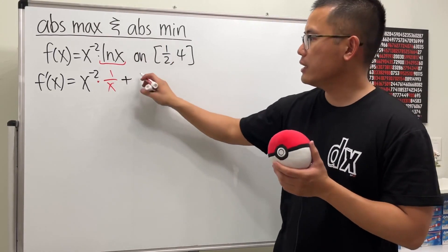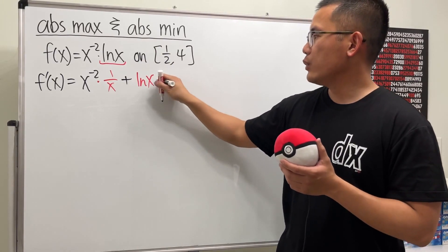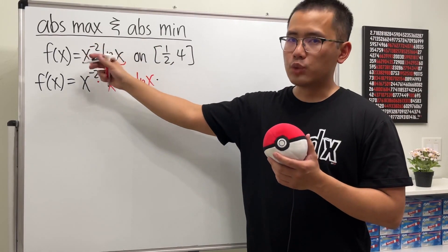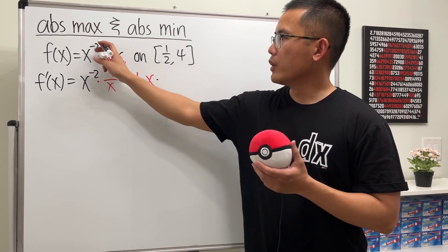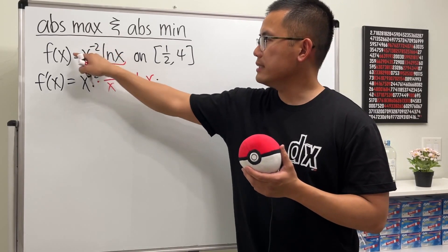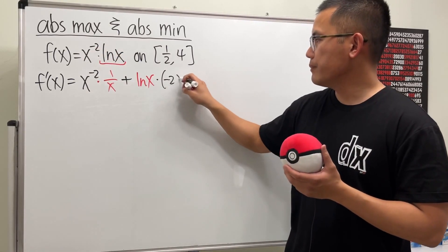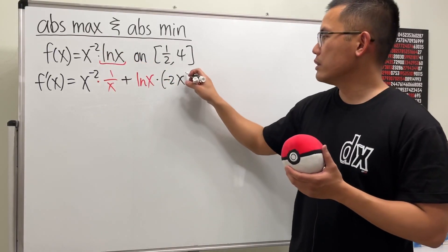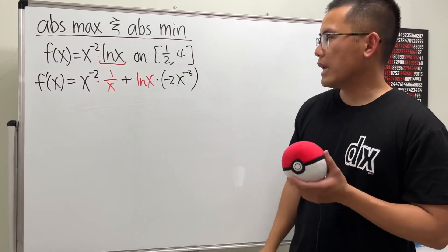And then we continue. We add the second function, which is ln x, and we multiply by the derivative of the first. The derivative of x to the negative 2: we bring the power to the front, so we have negative 2, and then minus 1 to the power, so we have negative 3.